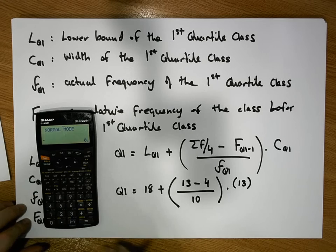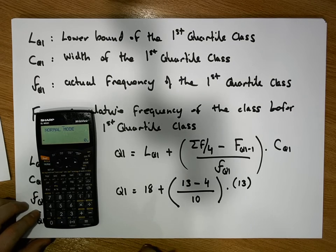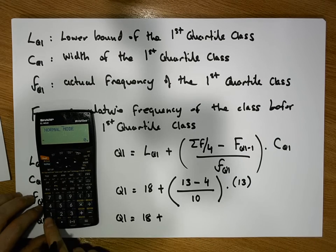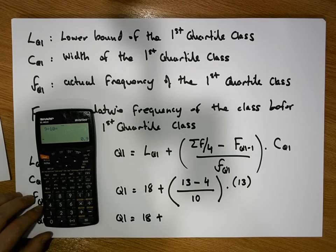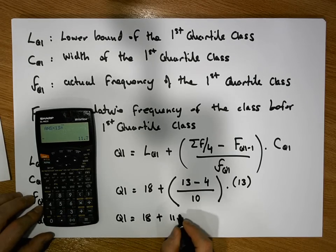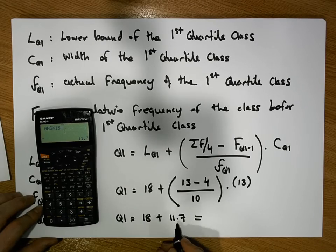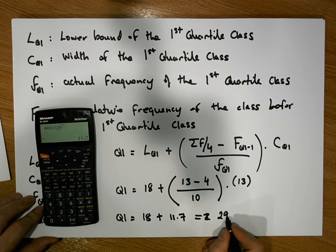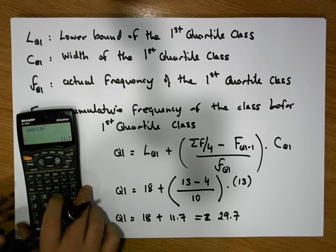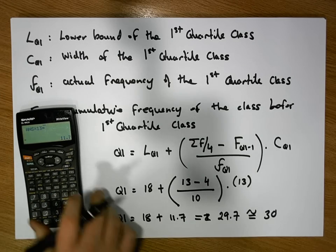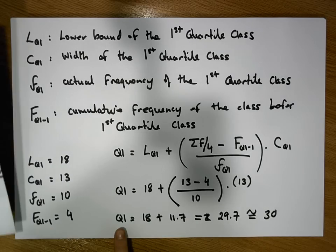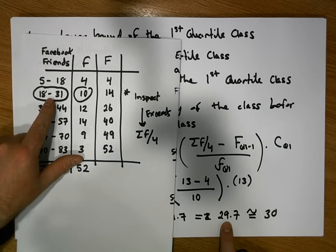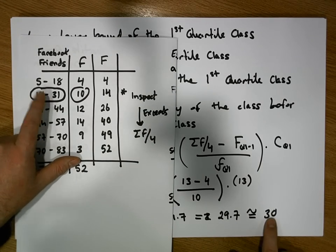Inside the brackets: 13 minus 4 is 9. This represents 9 tenths of 13. So Q₁ equals 18 plus 9/10 times 13, which gives 11.7. Therefore Q₁ equals 18 plus 11.7, which gives us 29.7, approximately equal to 30. The first quartile is at position 29.7, which falls within our first quartile class as expected, and when rounded to 30 it still remains within that class.